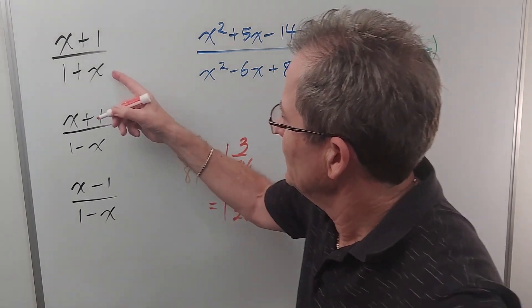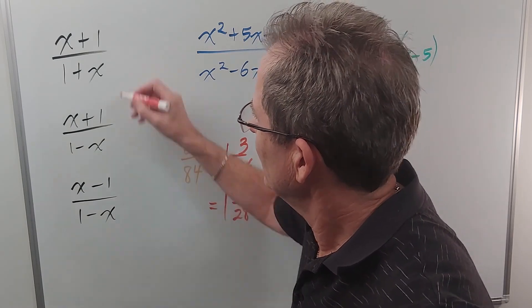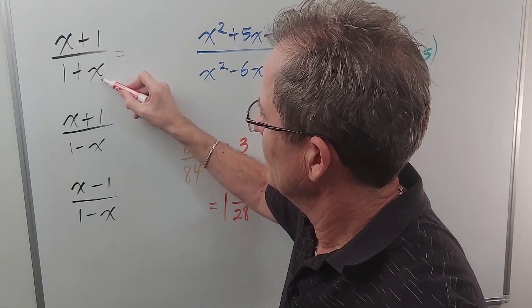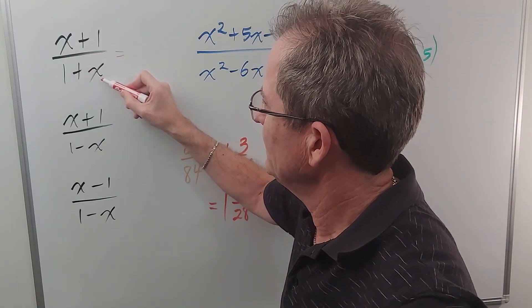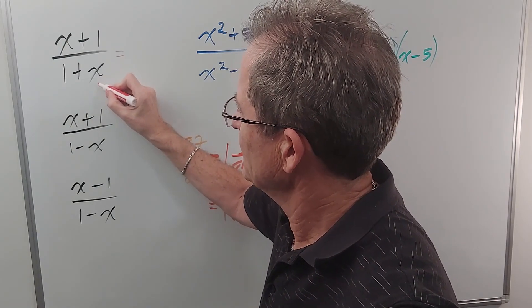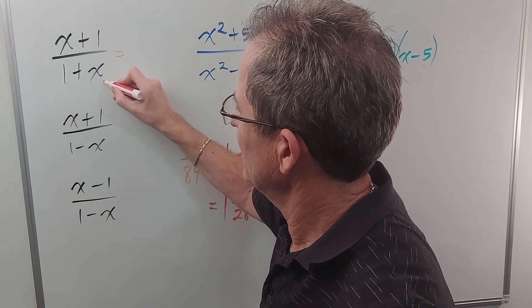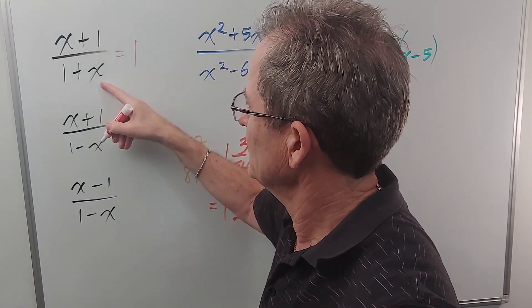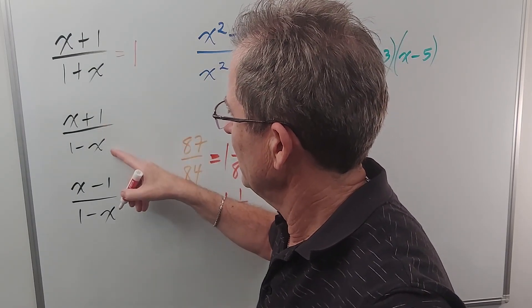Let's look at these three and see if we can simplify them. Remember, you cannot cancel things that are added, so these x's don't cancel and become ones. But you can also see that one plus x is the same as x plus one. The order doesn't matter, so the numerator and denominator are actually the same, so that just reduces to one, as long as x is not equal to negative one.